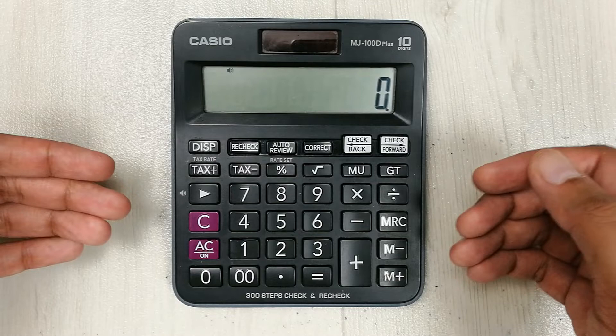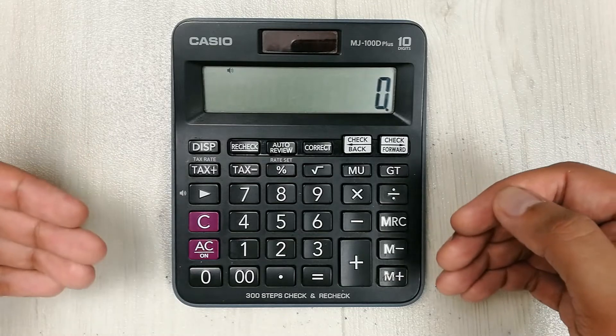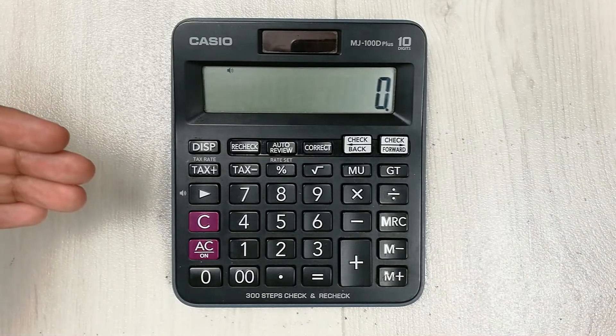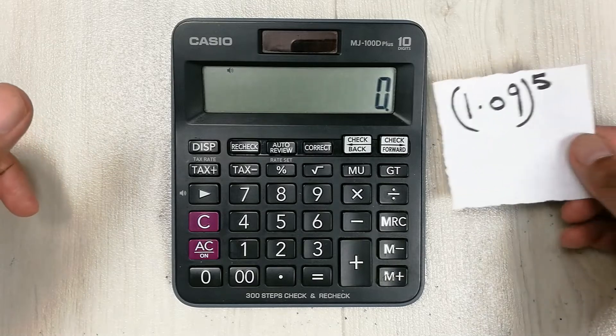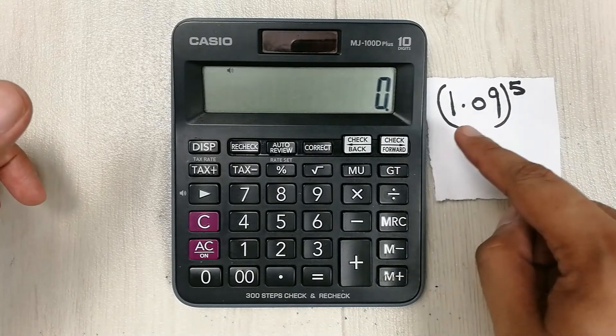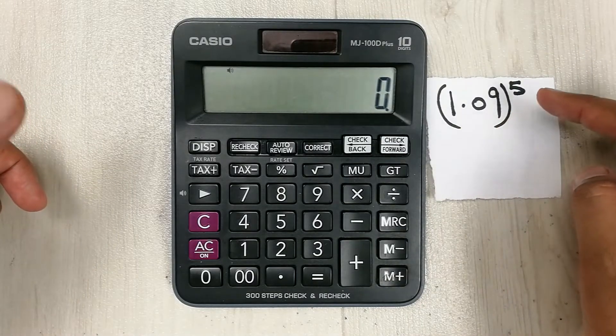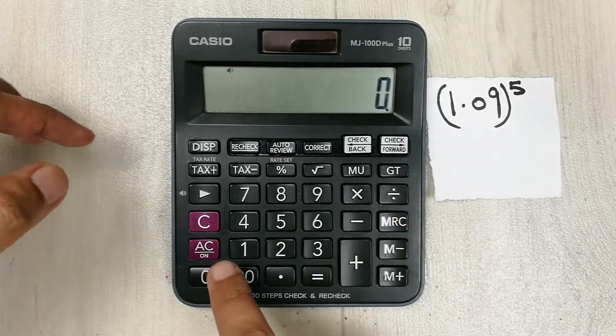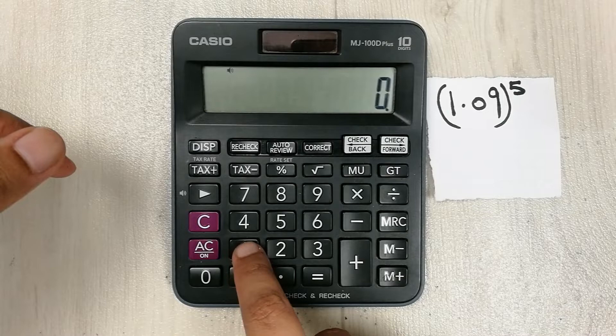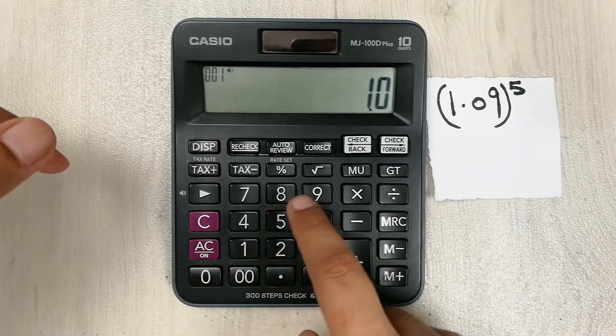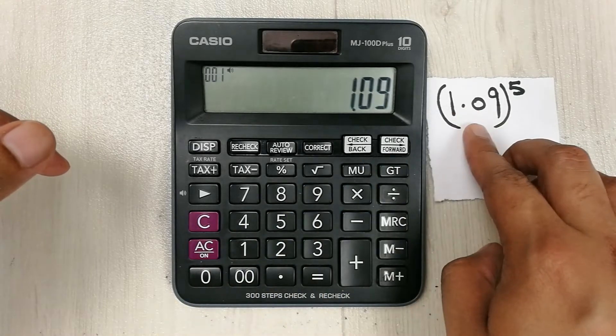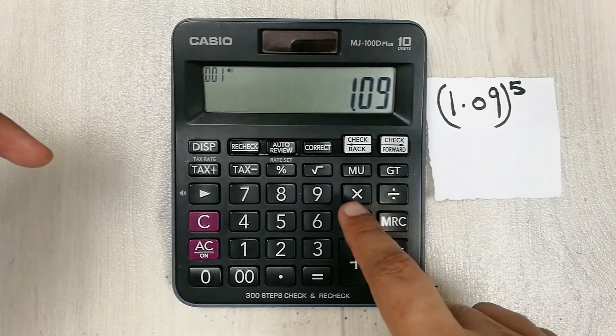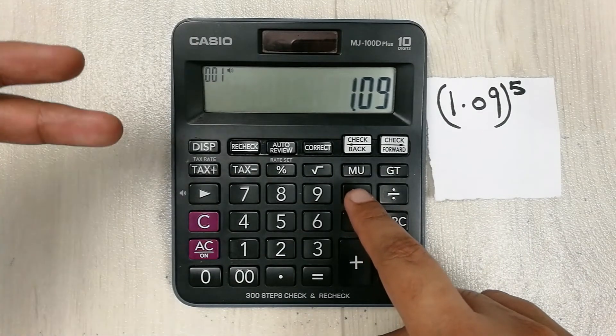So how can you do it? Let's say for example I have this value, it is 1.09 raised to the power of 5. So how can we find it out on our calculator? In the first step we type 1.09 which is written over here, and then we press this multiply button two times.